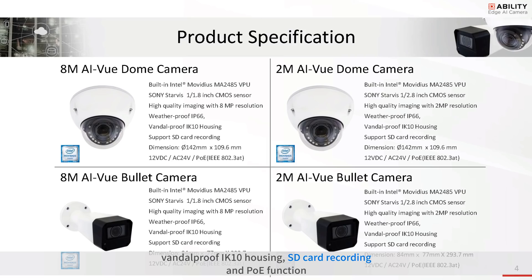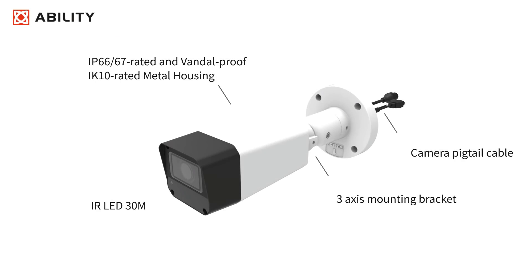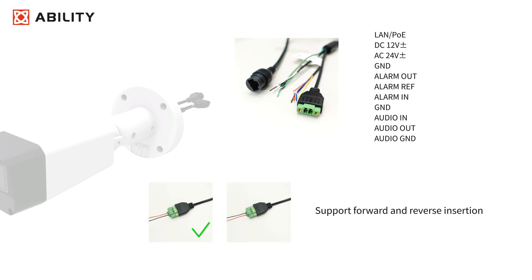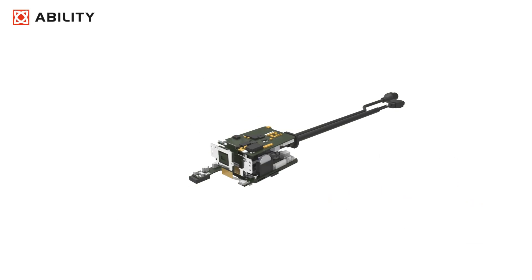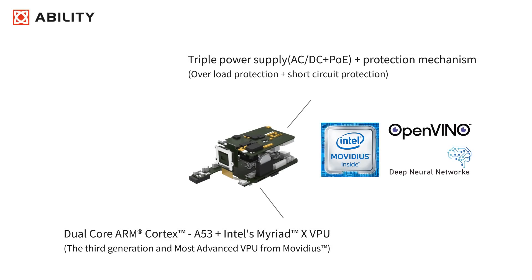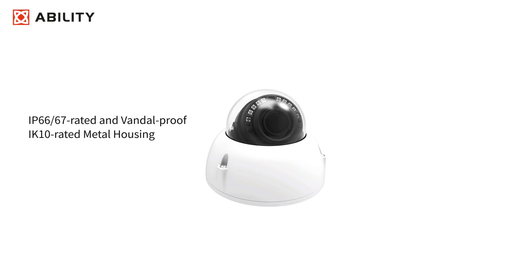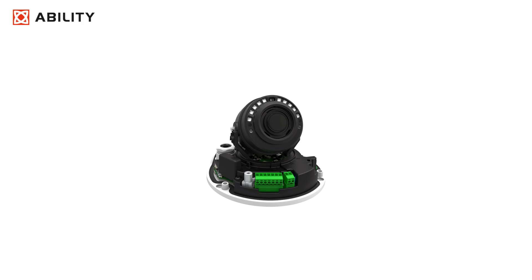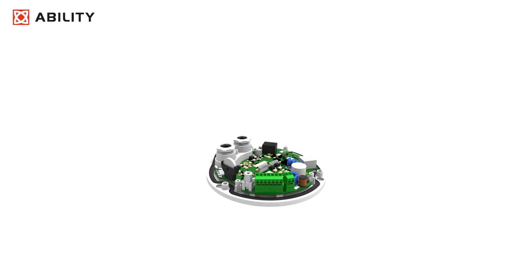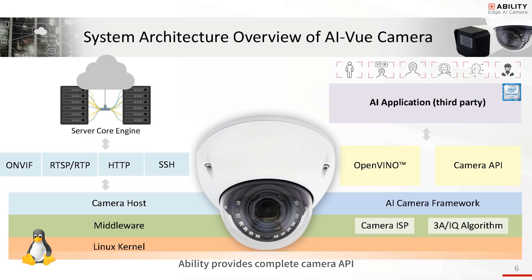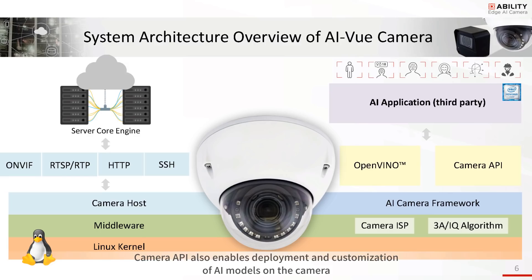Power is supported via PoE function. ABRT provides a complete camera API that customers can use for image pre- and post-processing. The open platform's common API layer allows customers easy customization and hosting of AI models on the camera.